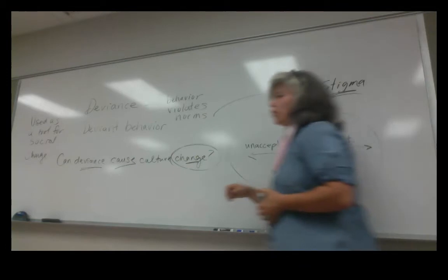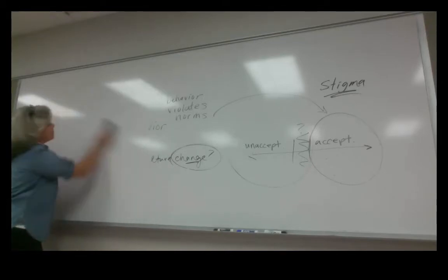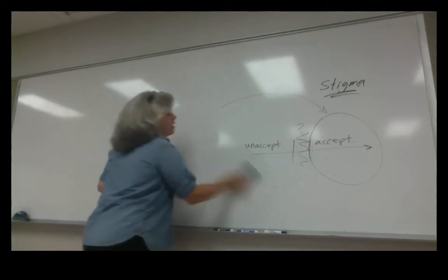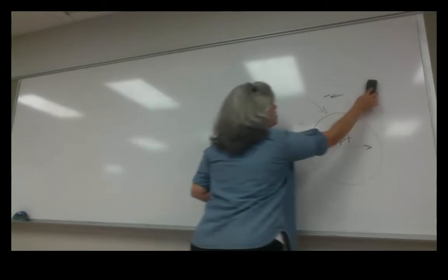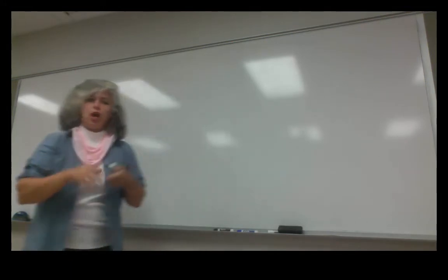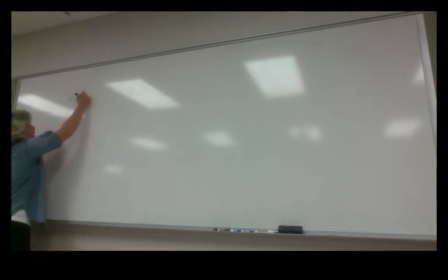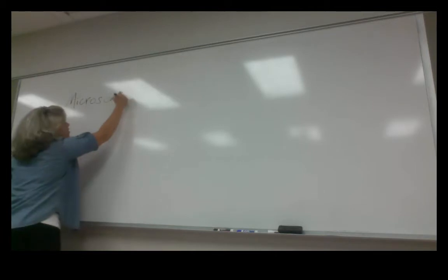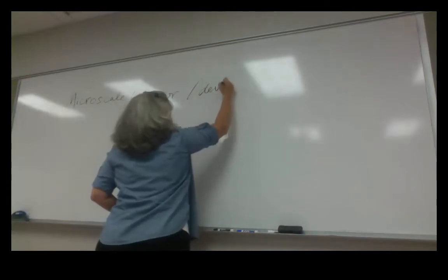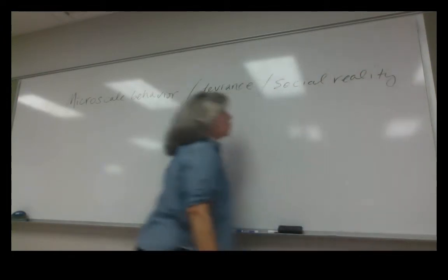Since we just finished talking about social groups, social organizations, and micro-scale behavior, I'm going to skip around in chapter six and jump to the part that talks about symbolic interactionism — our micro-level analysis of human behavior — and deviance, specifically the concept of social reality.